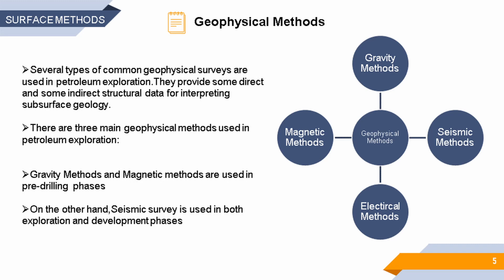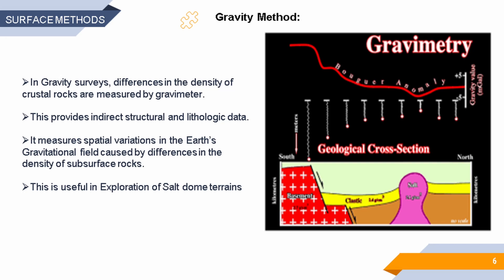Starting with geophysical methods: geophysical methods can be used for cost-effective site characterization and monitoring by observing variation in the gravity, magnetic, seismic, and electric properties of surface materials. In gravity surveys, differences in the density of crustal rocks are measured by a gravimeter. It measures spatial variations in the Earth's gravitational field caused by differences in the density of subsurface rocks.